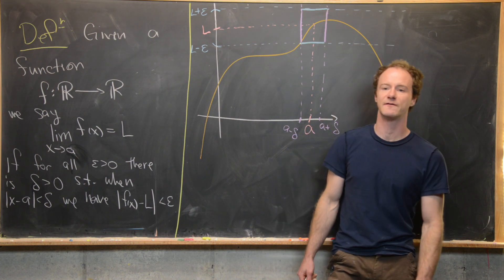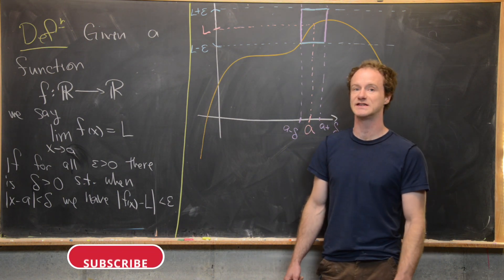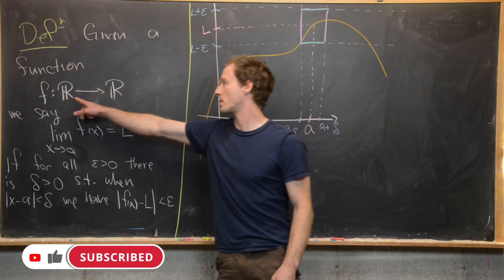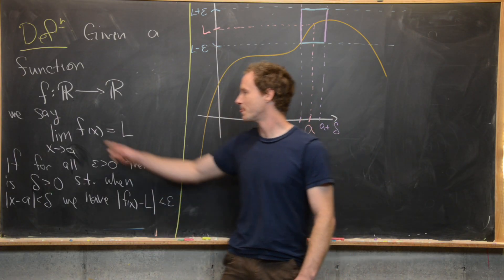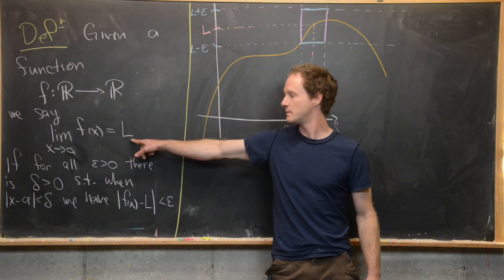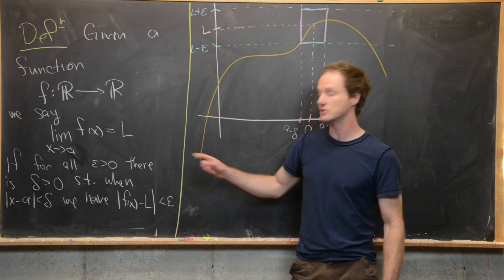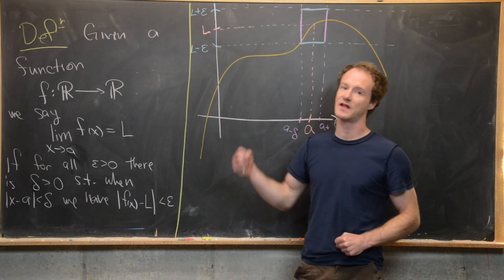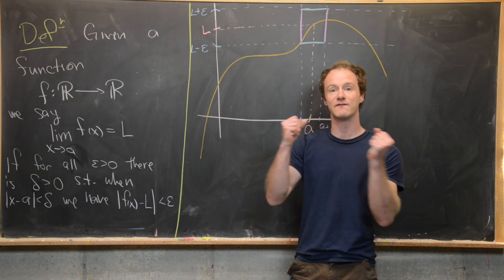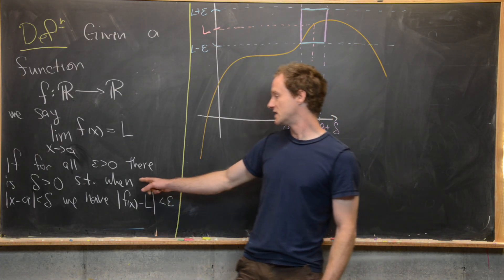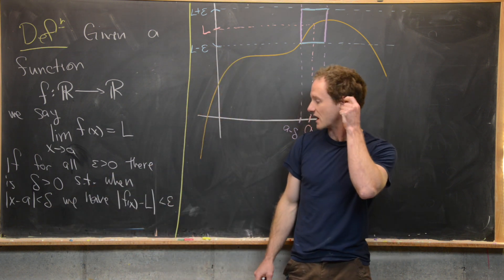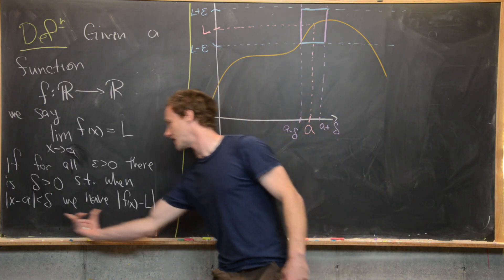We're going to start looking at the calculus of functions, beginning with the precise definition of a limit. Given a function f from the real numbers to the real numbers, we say the limit as x approaches a of f(x) equals L if for all epsilon greater than 0, there is a delta greater than 0 such that if |x − a| < delta, then |f(x) − L| < epsilon.